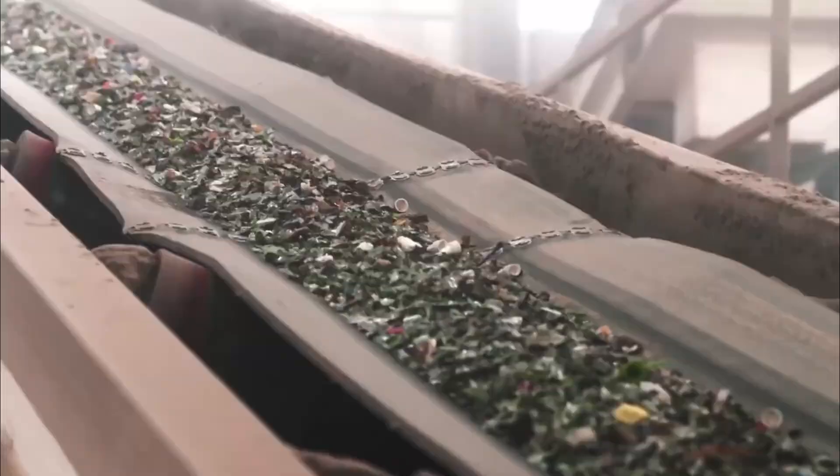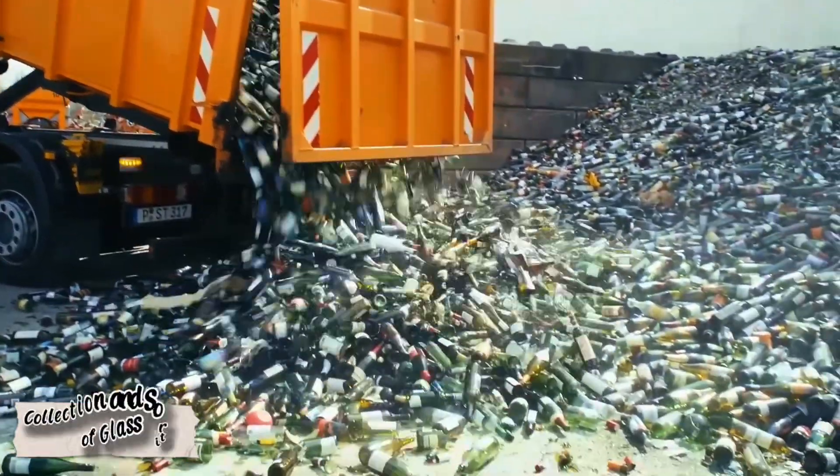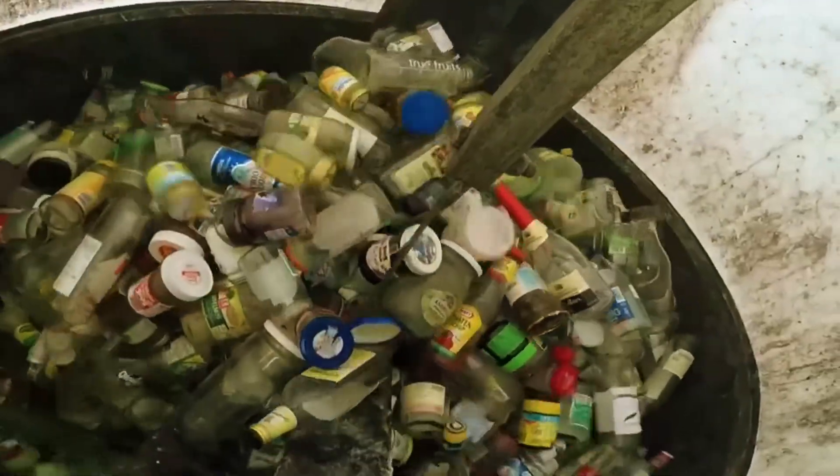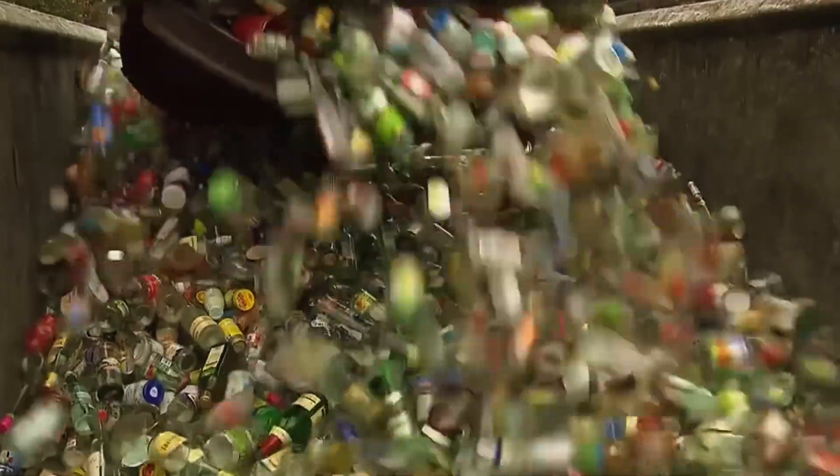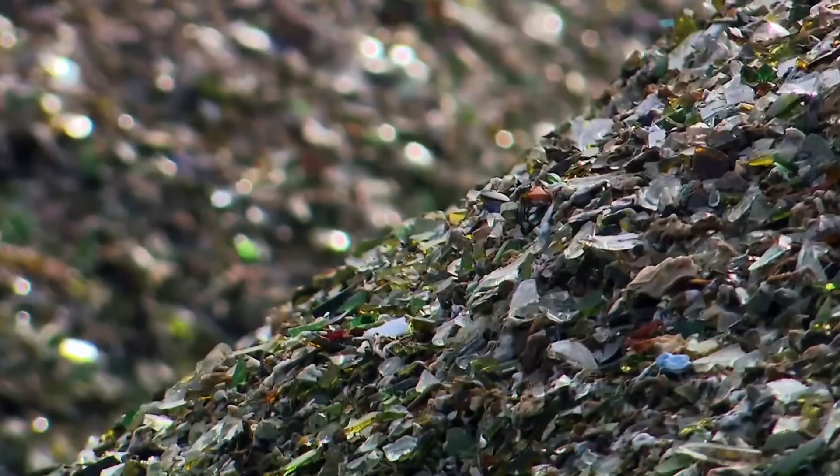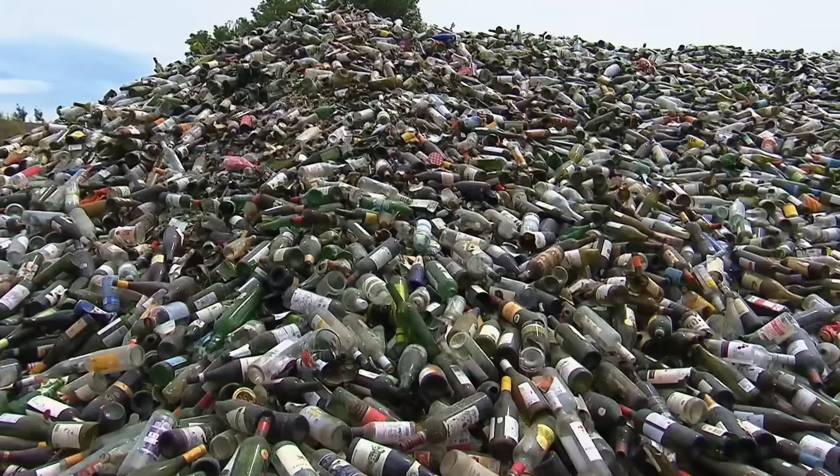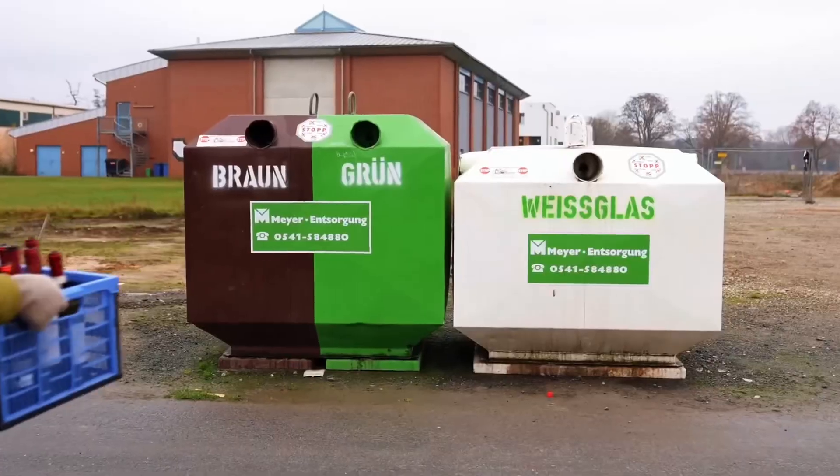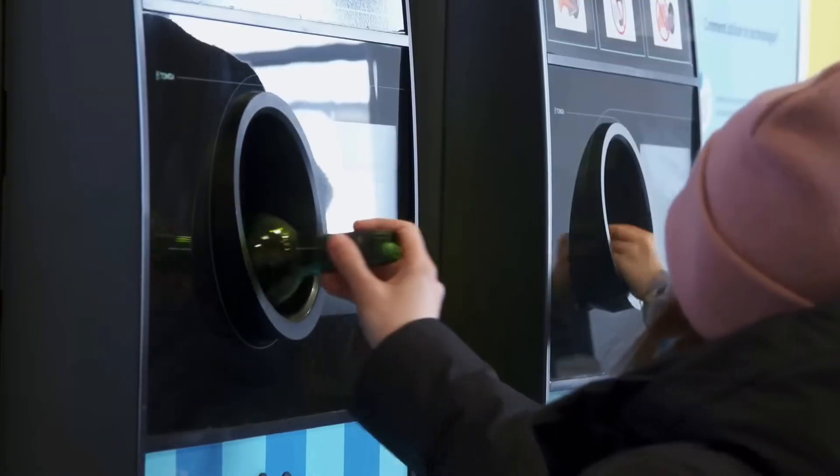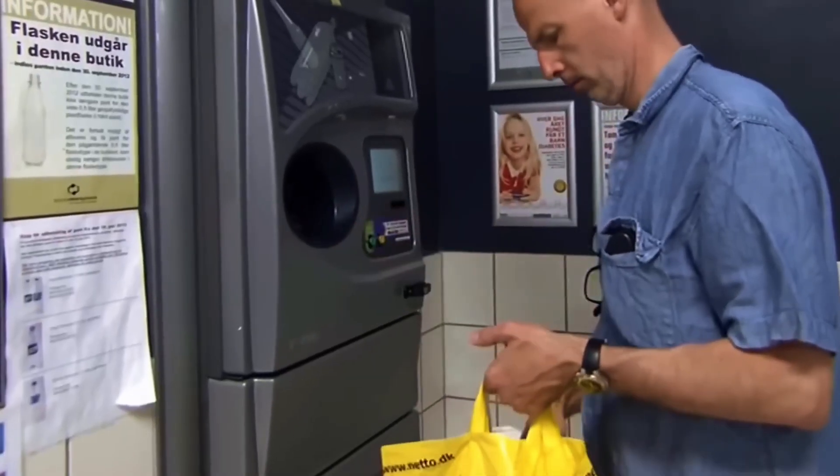It all begins far from the factory, on city streets and at bottle collection points. Containers marked glass-only fill up with bottles and jars that have already served their purpose. Trucks deliver this raw material to recycling centers where the precise sorting process begins.